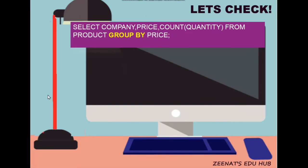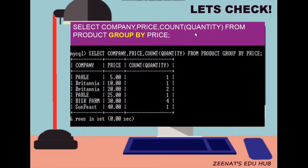Our next query is: SELECT company, price, COUNT(quantity) FROM product GROUP BY price. This will arrange or group the records according to the price column and also display the company and count its quantity. You can see that records are grouped based on price — 5, 10, and so on — and the quantity of product is also counted.